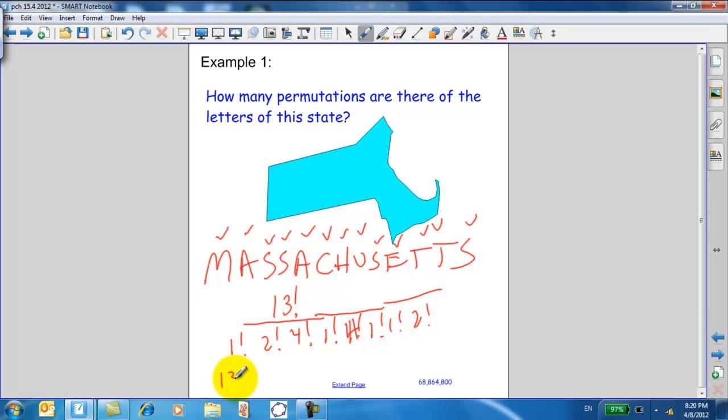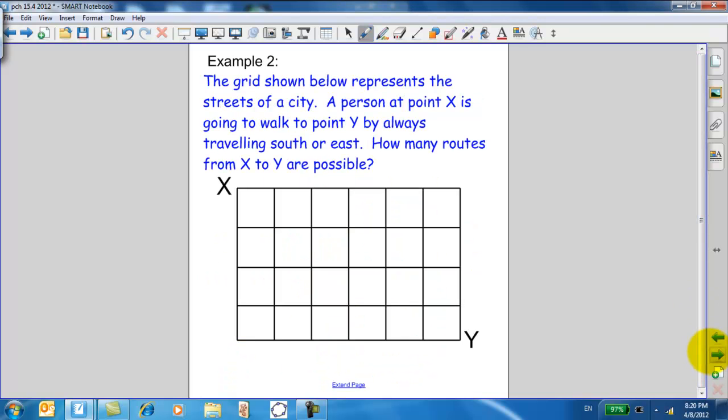Now, when you're in your calculator, be careful. 13 factorial divided by, a common mistake for students is to go like this. Do you see the problem with that? You've got to put parentheses around your denominator multiplications or it's not going to work. And you should end up with this 68,864,000, 68,864,800.